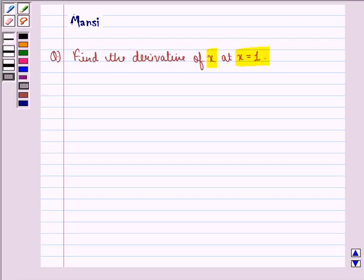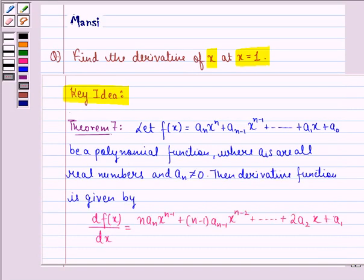Before starting with the solution, let us see the key idea behind the question, that is theorem 7 of your book that says let f(x) be equal to a_n x^n plus a_(n-1) x^(n-1) and so on till a_1 x plus a_0, be a polynomial function where a_i's are all real numbers and a_n is not equal to 0.